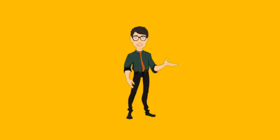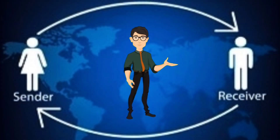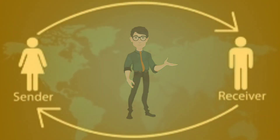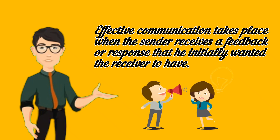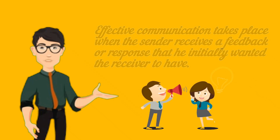In order for communication to take place, two main actors work together. They are called the sender and the receiver. Being able to send the message to a receiver does not guarantee a successful communication process. Effective communication takes place when the sender receives a feedback or response that he initially wanted the receiver to have.